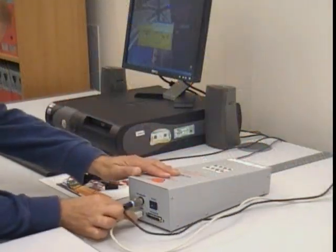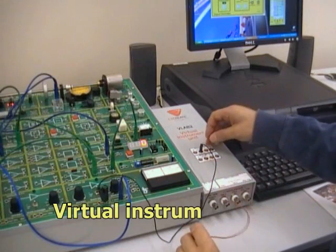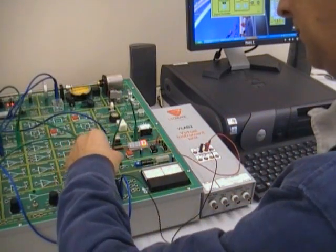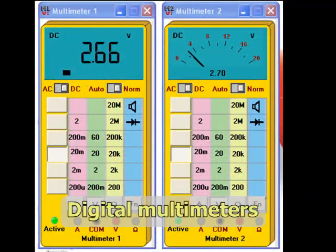When connected to a computer via USB, the virtual instrument allows a PC to act as test instruments, including two digital multimeters.